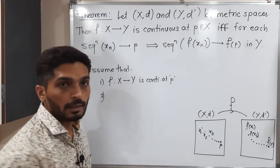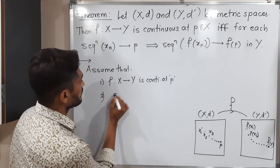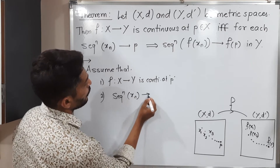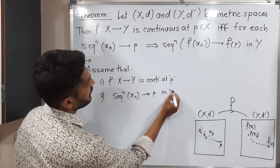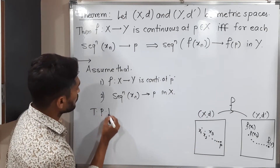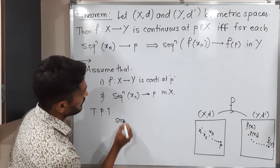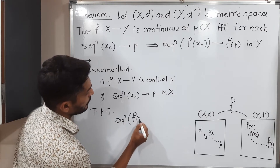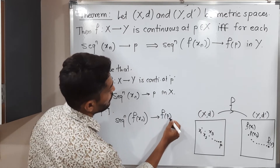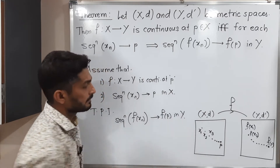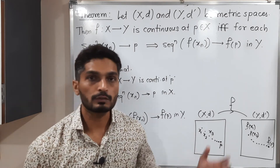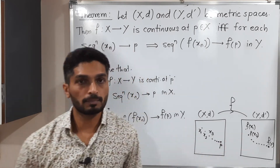And one more assumption: let the sequence xn converge to p in X. Then what we have to prove is that the sequence f(xn) converges to f(p) in Y. That is, if sequence xn converges to p, then its image sequence f(xn) converges to the image point f(p).